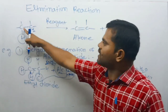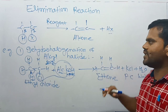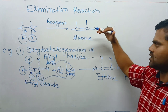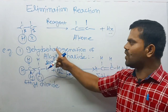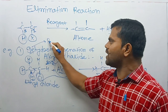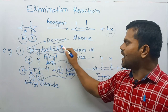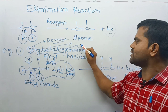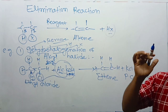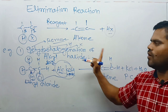In this example, the carbon-carbon single bond is converted to a carbon-carbon double bond. Let's understand the term dehydrohalogenation. What is the meaning? 'De' means remove, 'hydro' means hydrogen, and 'halogenation' means halogen. So dehydrohalogenation means the removal of hydrogen and halogen atoms.